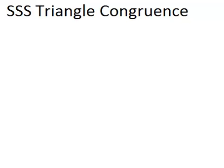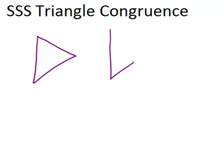In this video, we will learn about SSS triangle congruence. Let's first start by reviewing what it means for two triangles to be congruent. If two triangles are congruent, it means that all pairs of angles are congruent and all pairs of sides are congruent.